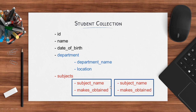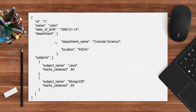Don't get confused — when we see the practical part doing CRUD operations, you will get a better idea of how the JSON will look. But if you want to see how MongoDB stores a document in JSON format, here it is. We have fields: id, name, date of birth. This is the department sub-document with its own set of fields. And this is subjects — here is the array with one sub-document and a second sub-document inside the array. When we perform CRUD operations, we will build this JSON so you will get a better idea.